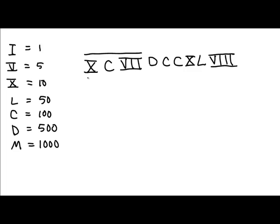So for example, look at this, XCVII with a bar over it, DCCXLVIII. What is this? The very first symbol we see is an X followed by a C. This is out of order.